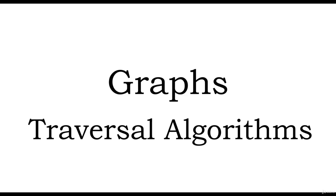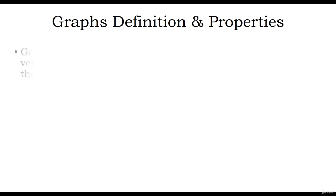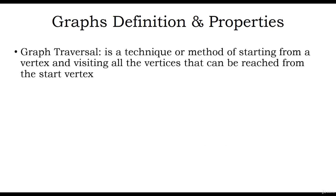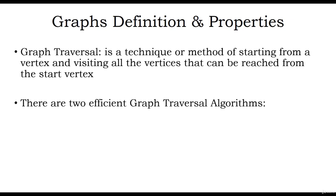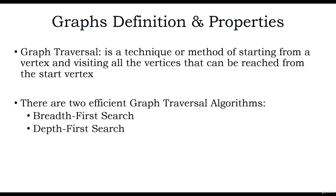In this section, we will cover graph traversal algorithms or traversal techniques. We have already seen the implementation of graphs in Python. Graph traversal is a technique of starting from a vertex and visiting all the vertices that can be reached from the start vertex. There are two efficient graph traversal algorithms: breadth first search, also known as BFS, and depth first search, also known as DFS. These two are very important graph traversal algorithms in data structures.